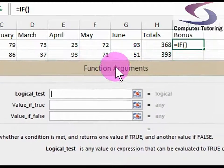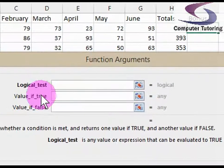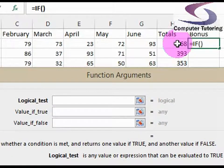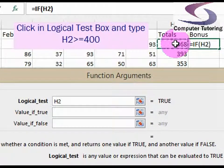I'm just going to move that down a little bit. So, the function argument box. Basically the logical test is the condition. Our condition in this case is H2, which is the sales for Frank Junior,